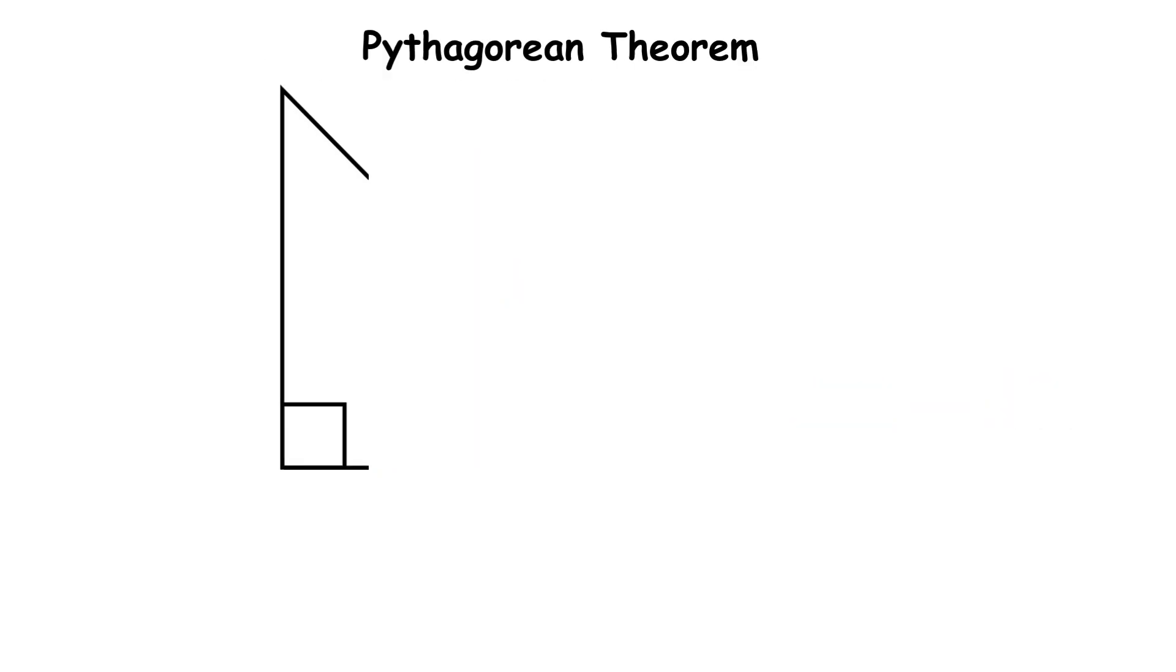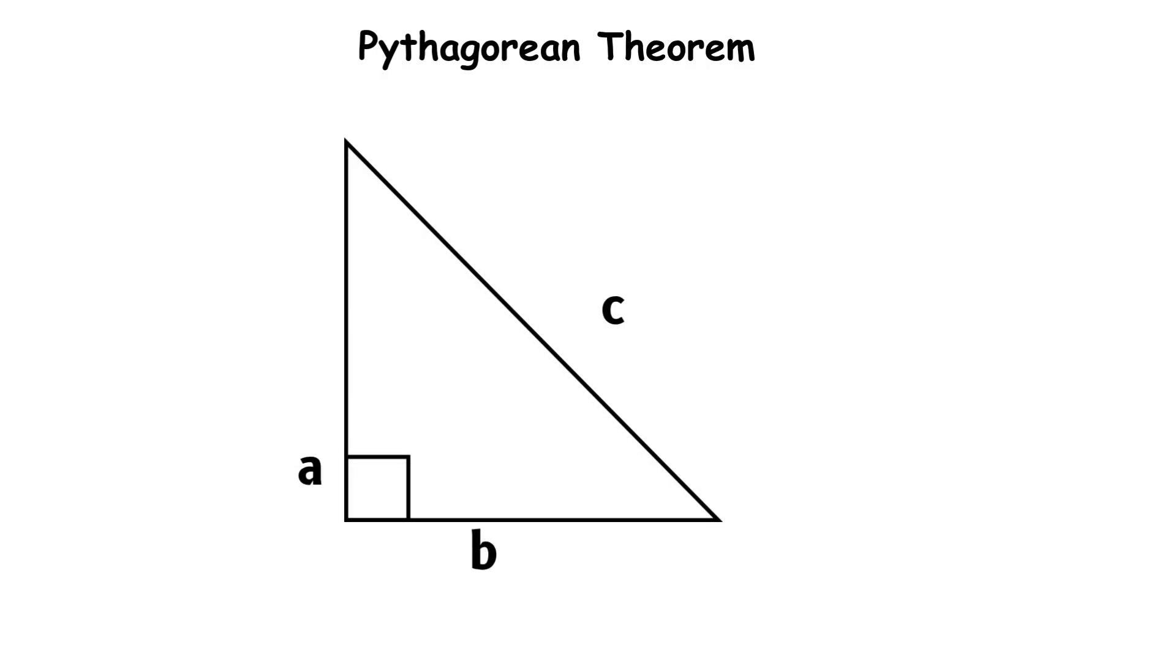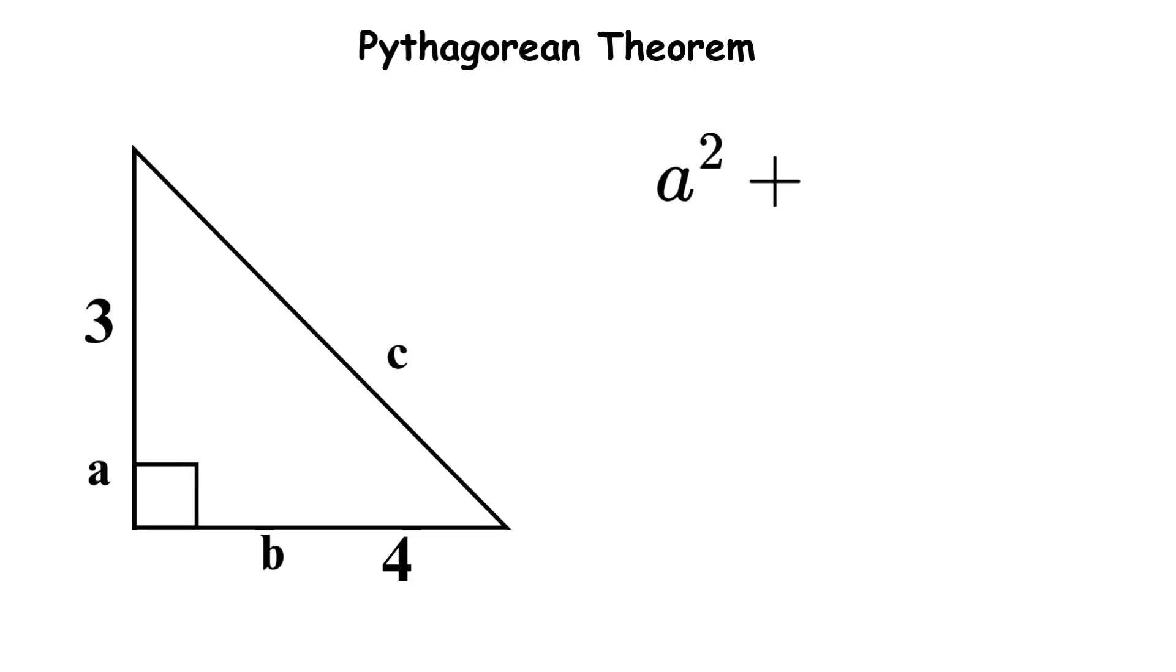In simple terms, if you have a triangle with one 90-degree angle, there's a special relationship between all three sides. Imagine a right triangle where one side is 3 units long and another side is 4 units long. Using the formula a squared plus b squared equals c squared, we get 3 squared plus 4 squared equals c squared, which means 9 plus 16 equals 25, so c equals 5.